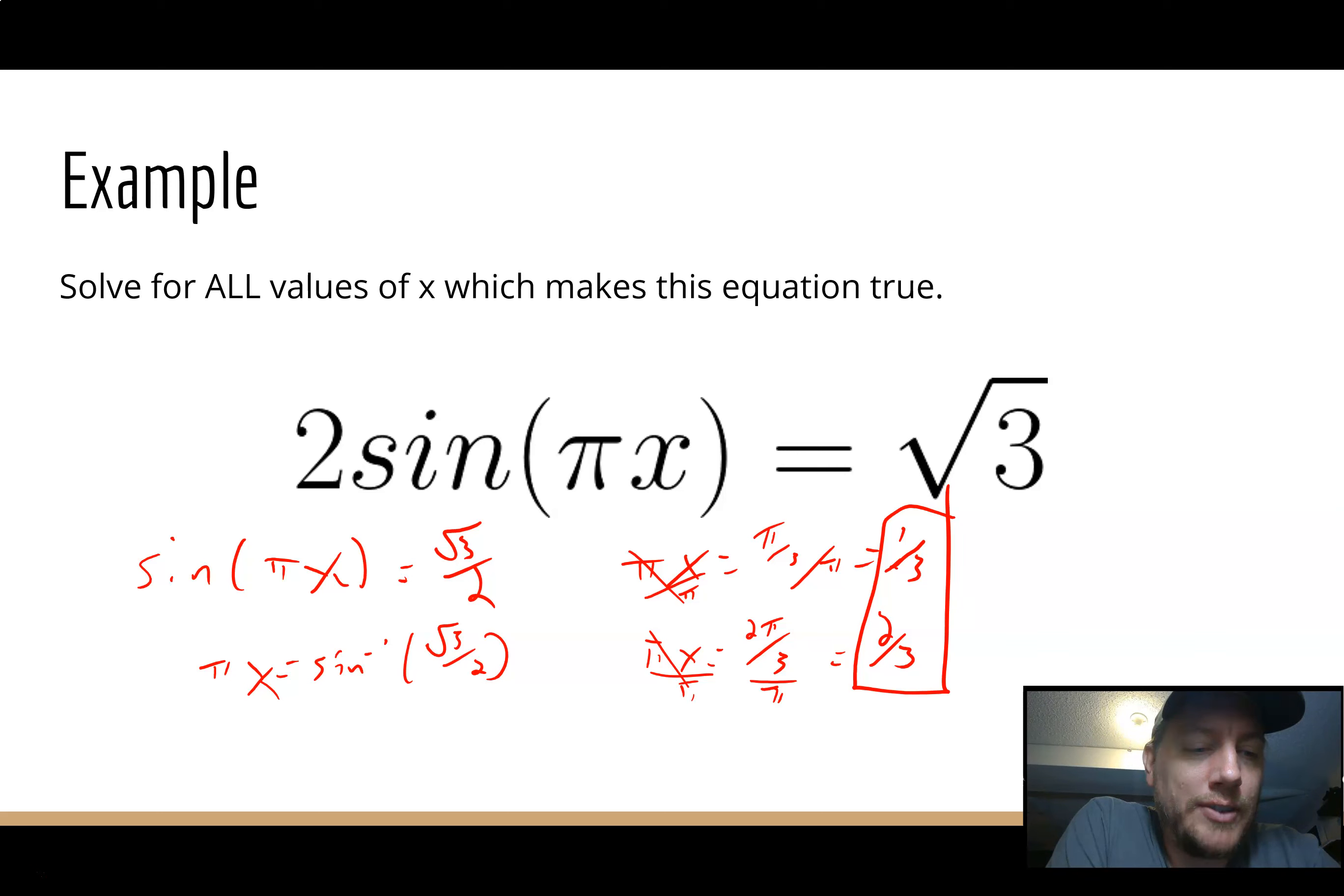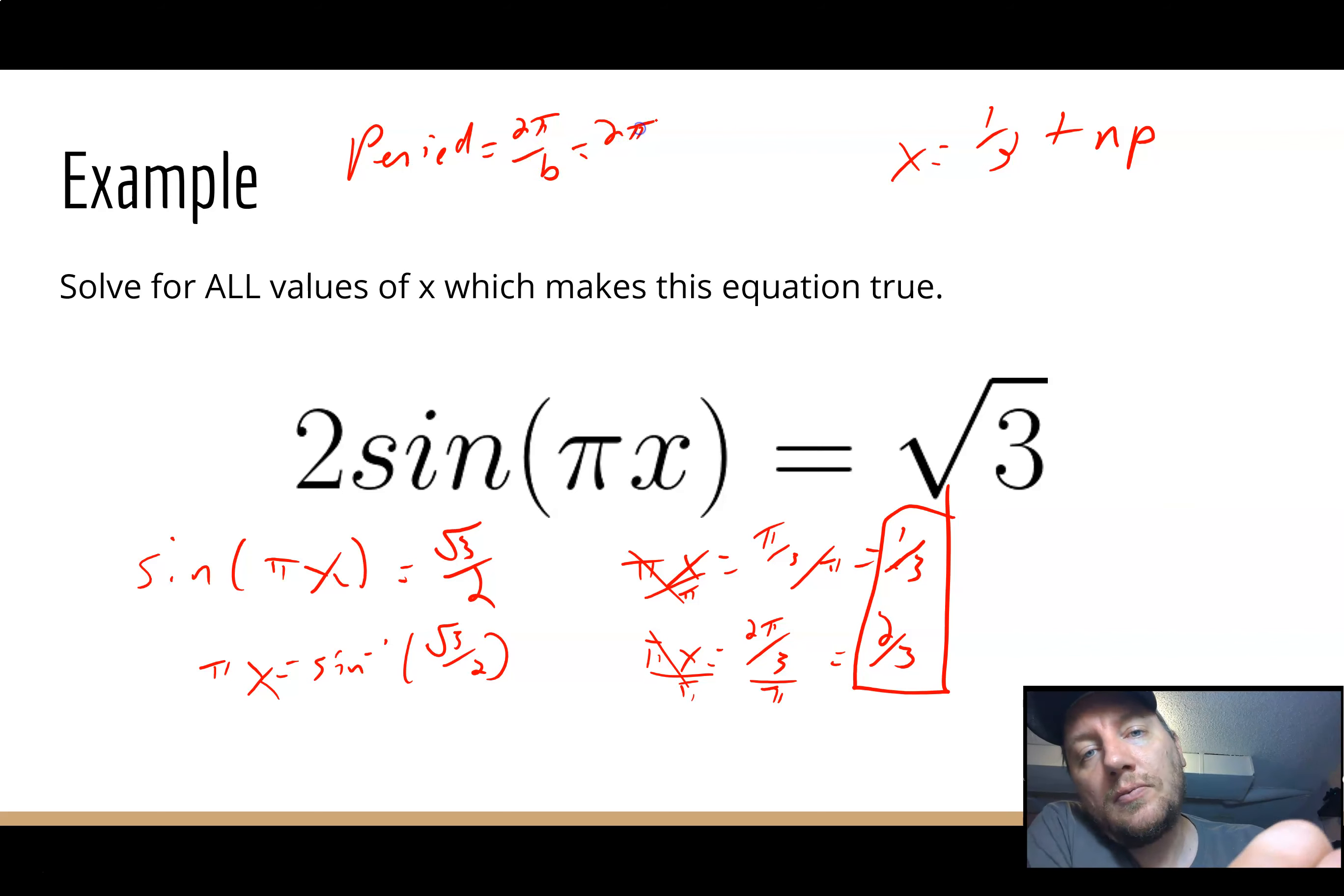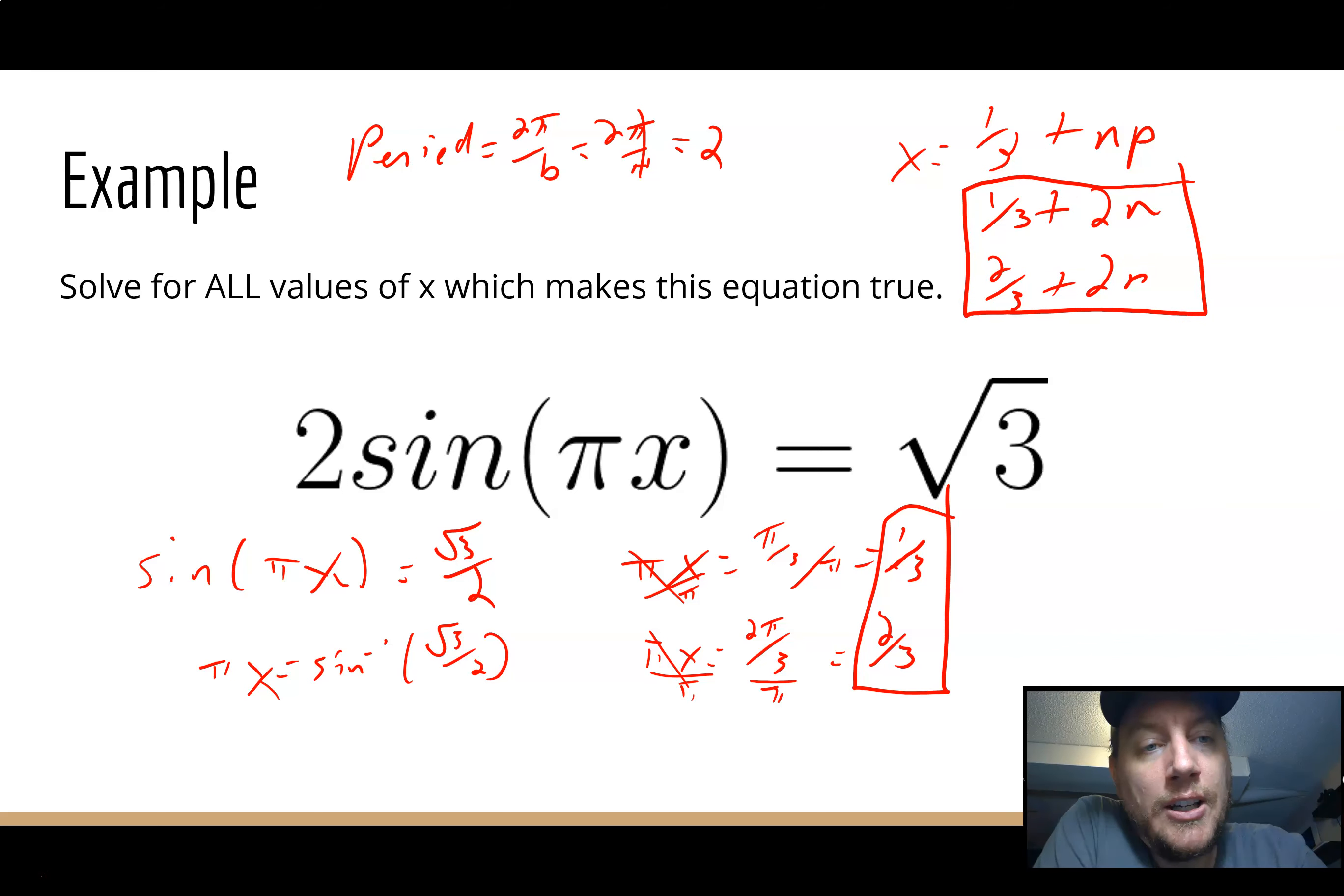However, this doesn't give us a domain to look in. This doesn't give us a 0 to 2π. It just says all answers. So the problem with that is we then have to go ahead and think about, well, it is 1/3, but it is also plus n times p, a number times the period, because every period it's going to repeat itself. So if you remember, the period is 2π/b. In this case, b is π, 2π over π is 2. So 1/3 plus 2n, and same thing here, 2/3 plus 2n. That gives you all possible answers, all infinite answers, because every time I add 2 to this, it's going to give me a solution.